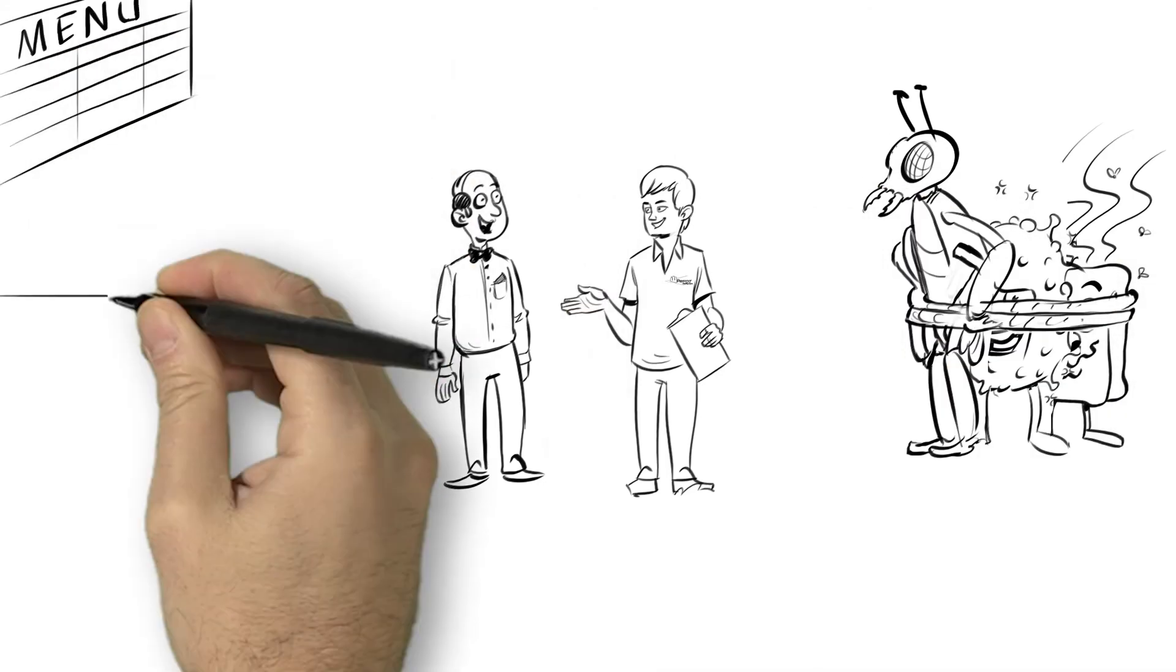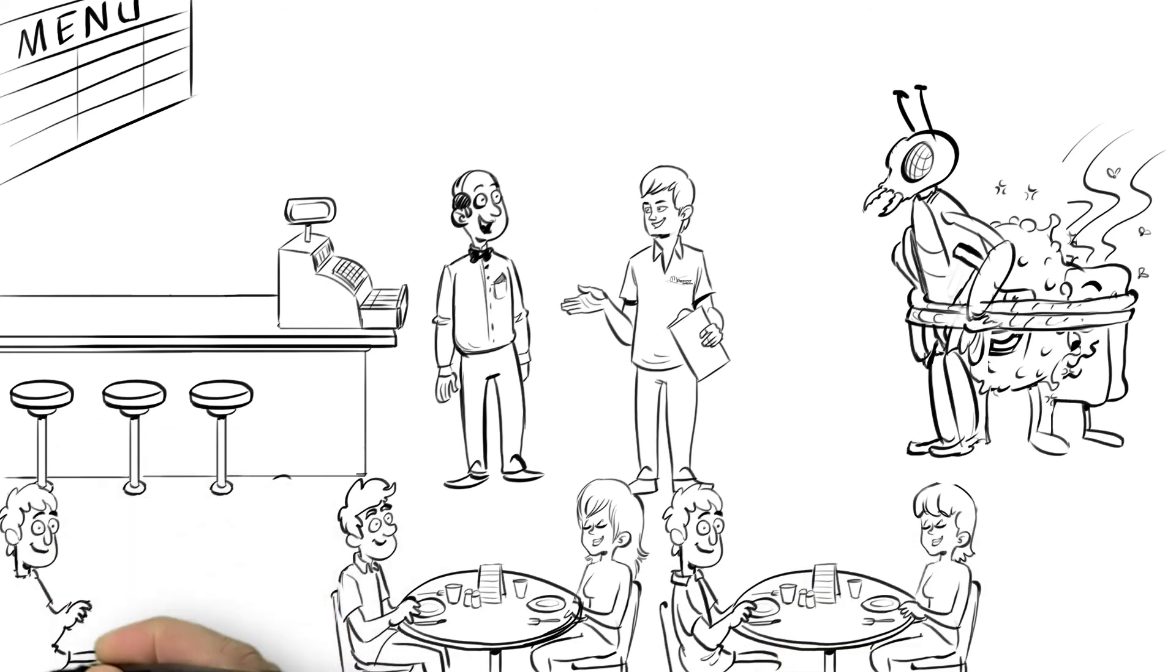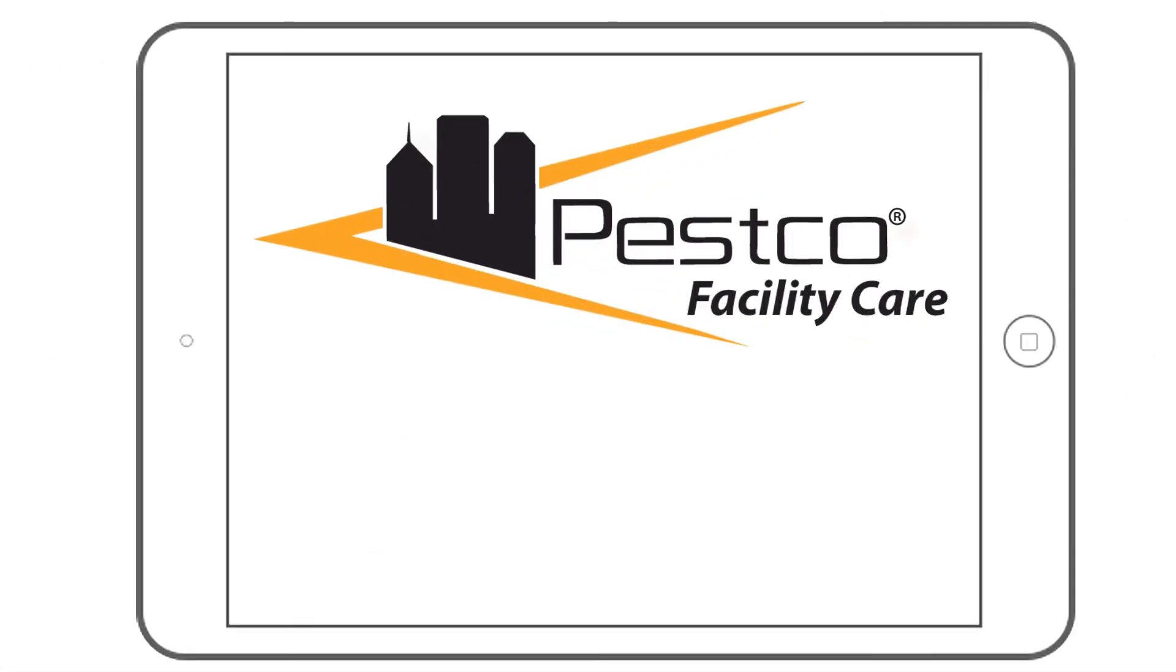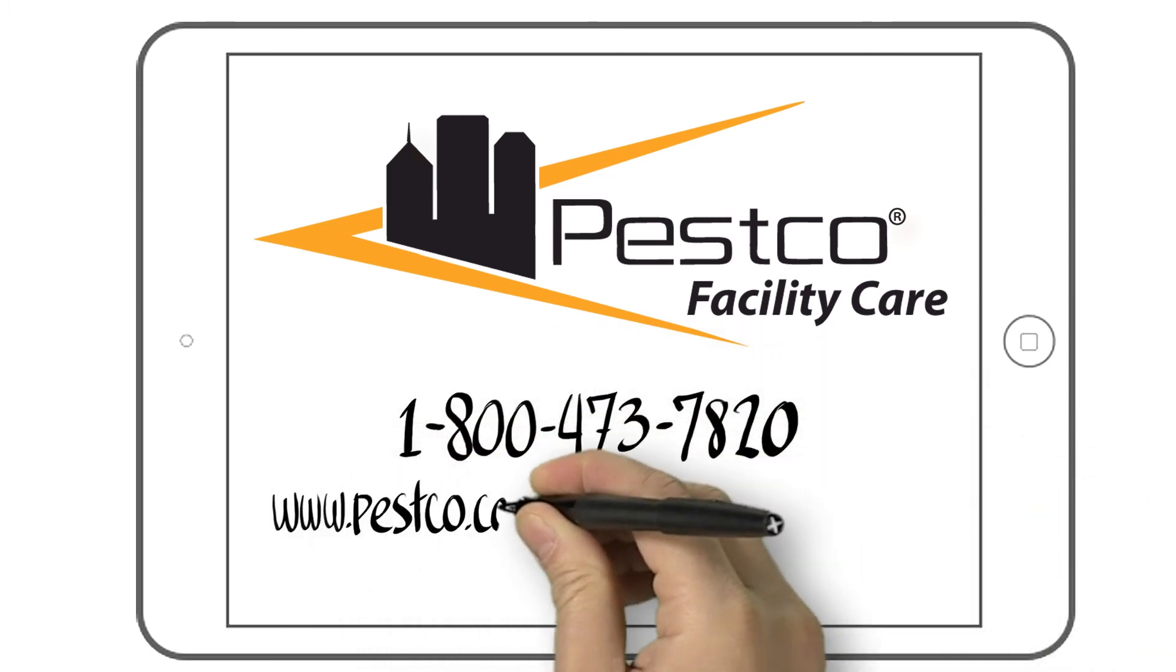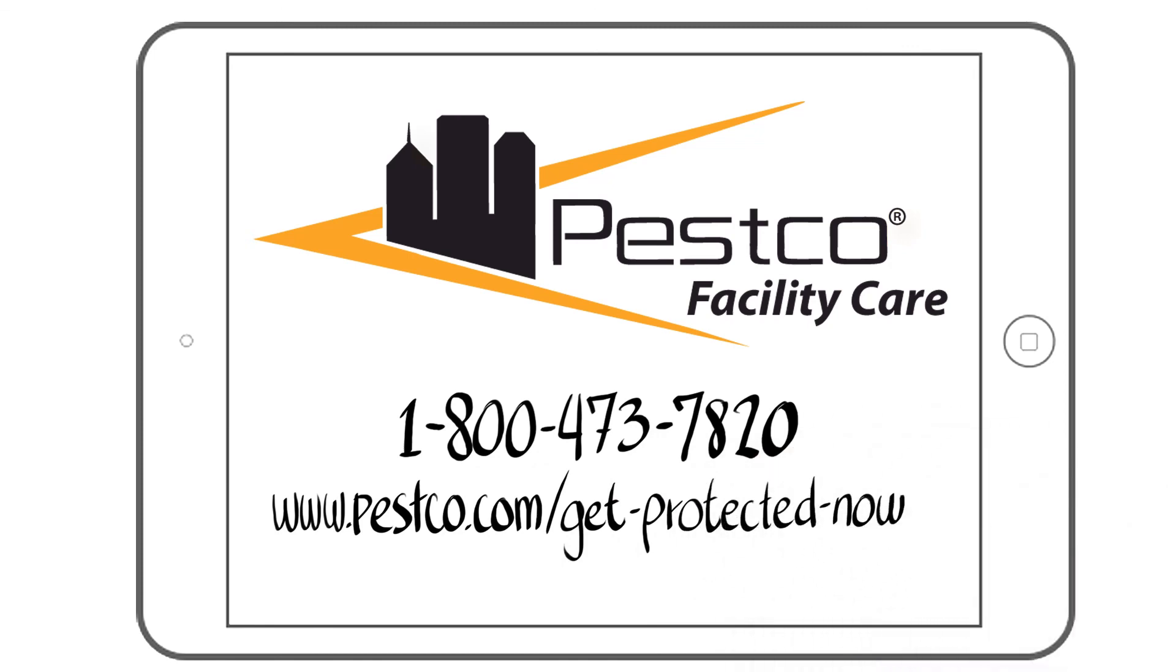It's easier than you think to get started today. Just ask your Pest Co representative to customize a package for you with Pest Co's exclusive right-to-the-point service selector. Call 1-800-473-7820 or go to www.pestco.com. Get protected now.